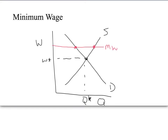What minimum wage creates is disequilibrium in the market — any place where it's not at equilibrium. Here is the quantity demanded, and here is the quantity supplied, so there are more workers willing to work because the wage is higher. Firms are less willing to hire workers because they have to pay them a higher wage. So what we've created is a surplus of workers — by definition, a price floor must create a surplus of workers.